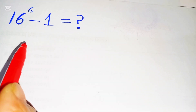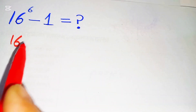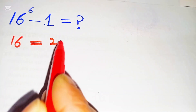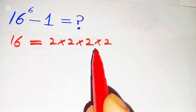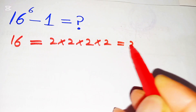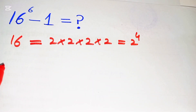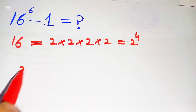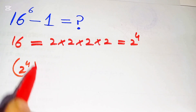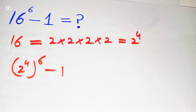First of all, 16 can be written as 2 multiplied by 2 is 4, multiplied by 2 is 8, and multiplied by 2 is 16, and so 16 is equal to 2 to the power of 4. Now this can be written as 2 to the power of 4, whole to the power of 6, then minus 1.